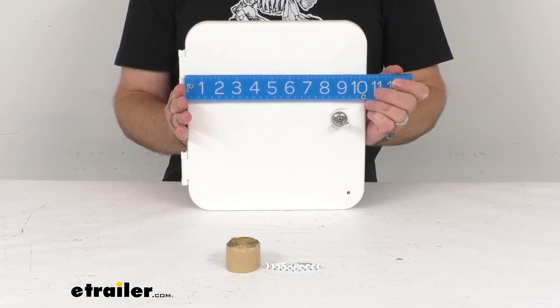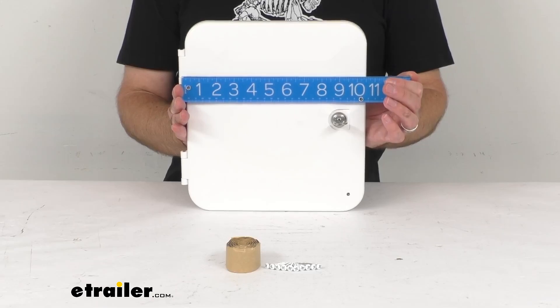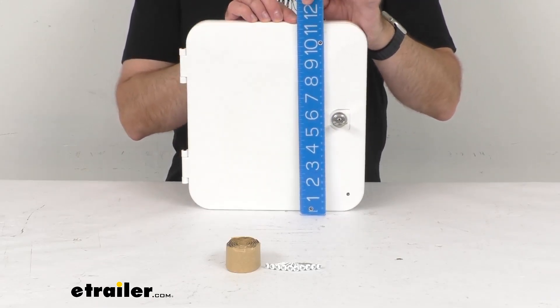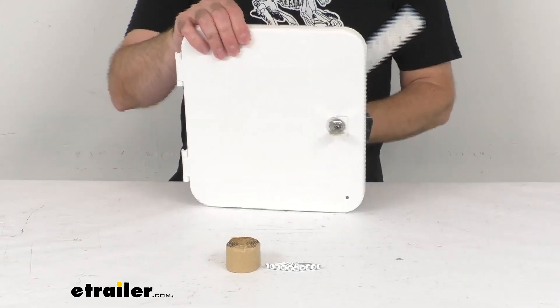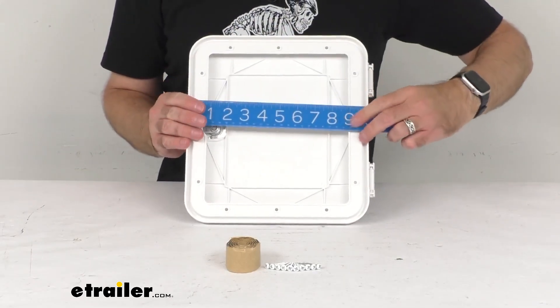Holding up my ruler there, looks like we're sitting right about 10 and 3/8 inches wide. The height is about 11 and 3/8 inches tall, and then the cutout is looking right about...